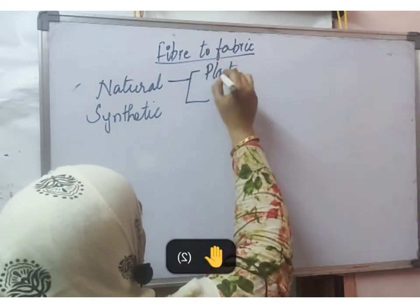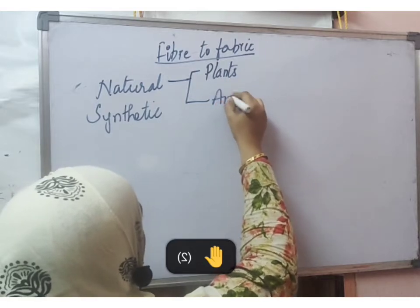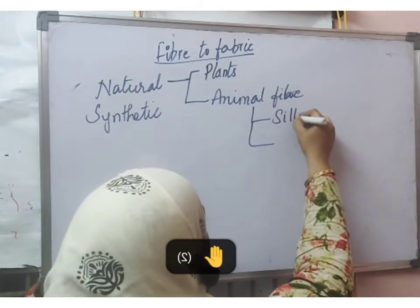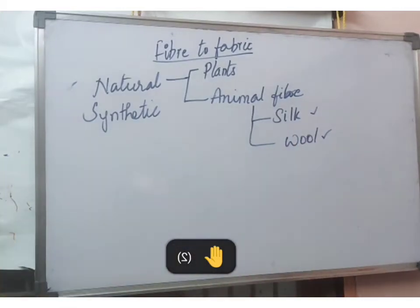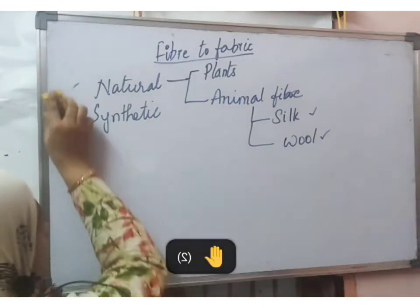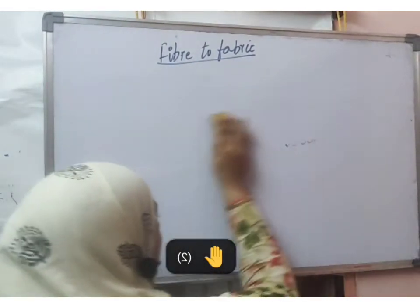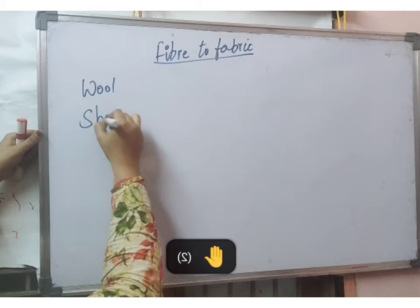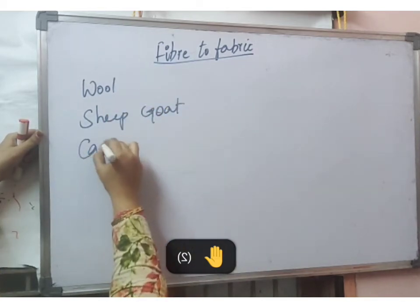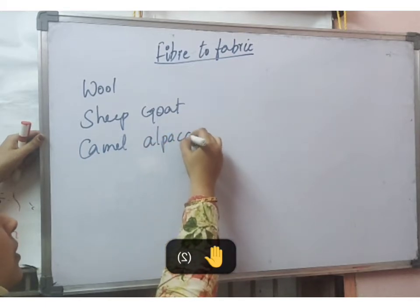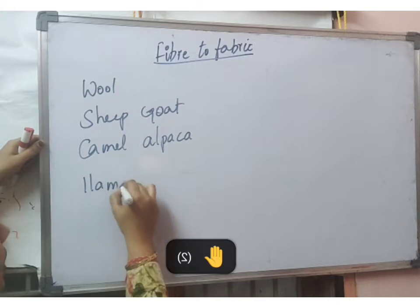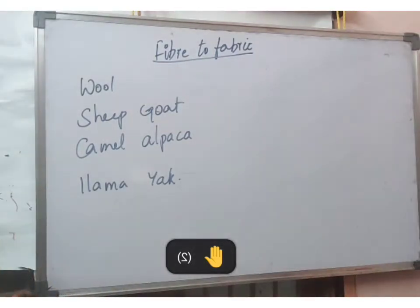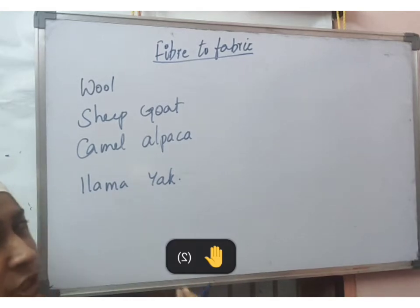We are discussing only animal fibers — not plant-based natural fibers. In animal fibers, we will be discussing silk and wool; first wool, then silk. Wool is obtained majorly from sheep, but there are other animals also from which wool is obtained: sheep, goat, camel, alpaca, llama, and yak. From all these animals wool is obtained.